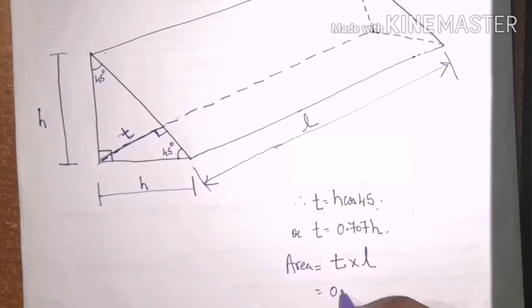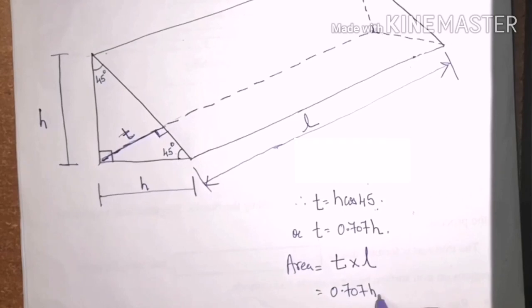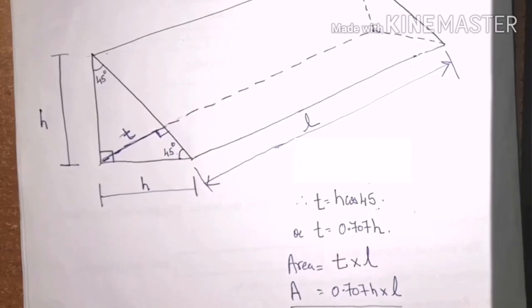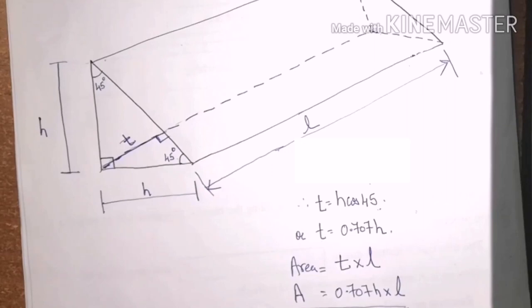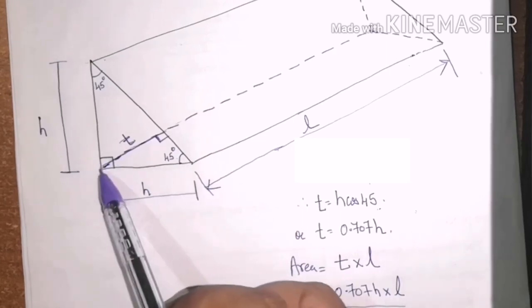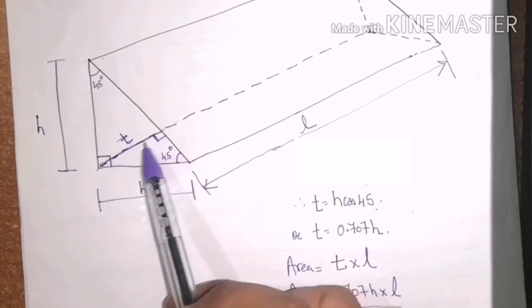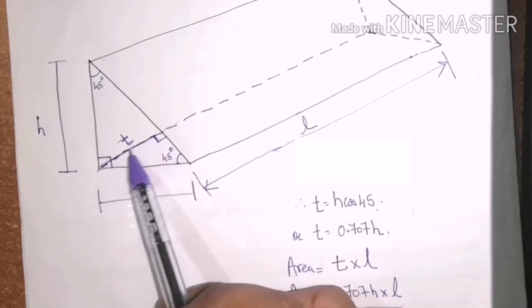So, T we have found out 0.707 multiplied by h, L is L. So, area will be 0.707h multiplied by L. Henceforth, we will be using A as 0.707h multiplied by L. This is just because the welding or any object fail from the minimum cross section area and the minimum dimension is T in this case, which is also known as the throat of the weld.